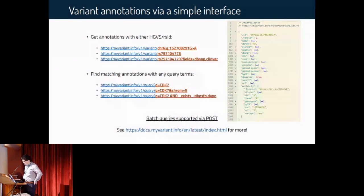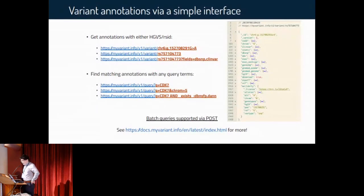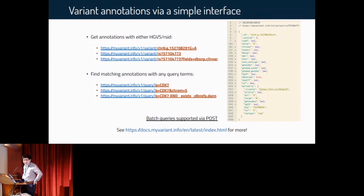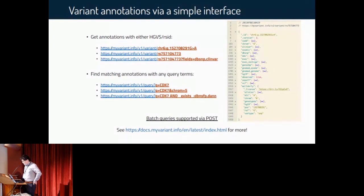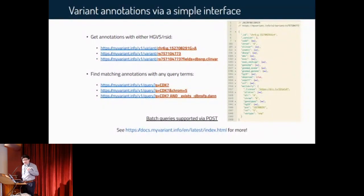In the third query, you say you're only interested in dbSNP and ClinVar annotation, and then you get a simplified response. We can also fetch annotations for all the variants matching a query term. In the fourth query we have q equal to CDK7, meaning fetching all the variants associated with gene CDK7. The query syntax is supported by Elasticsearch's query DSL, so we can leverage high-level operators like AND and score exists, as in the last query — finding all variants associated with CDK7 and having a SIFT score from the dbNSFP data source.